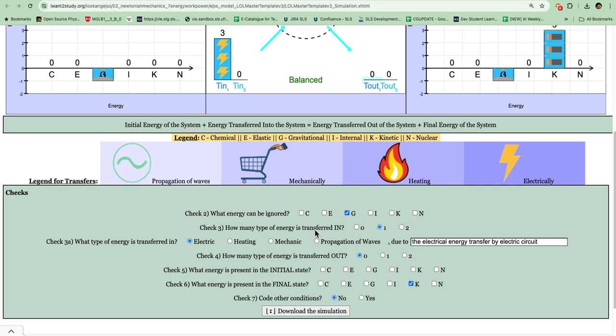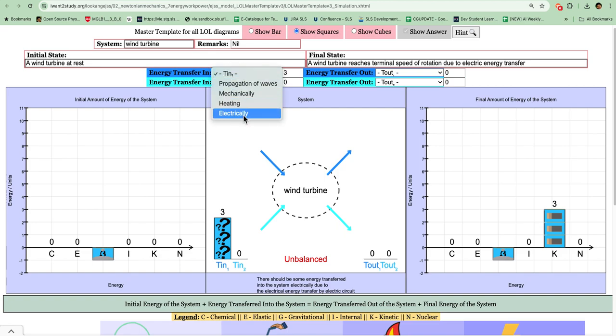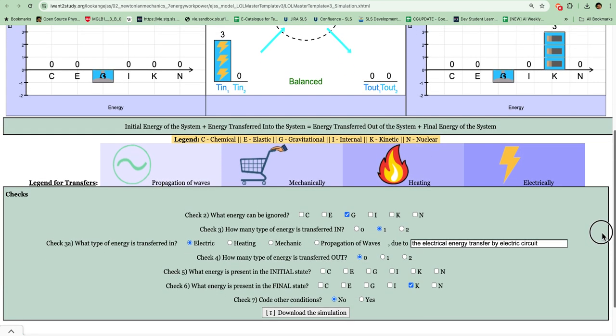Check number three is how many energies are transferred in. In this case, since in my final state I already stated there is energy coming in from electrical transfer, one of these check boxes must be electrical. Once I select this as electrical and select this as default none, it must be electrical, then it will be correct. Inside here I will provide the hint for students in case they use some other energy transfer such as heating, mechanical, or propagation of waves. I will change the strings here.